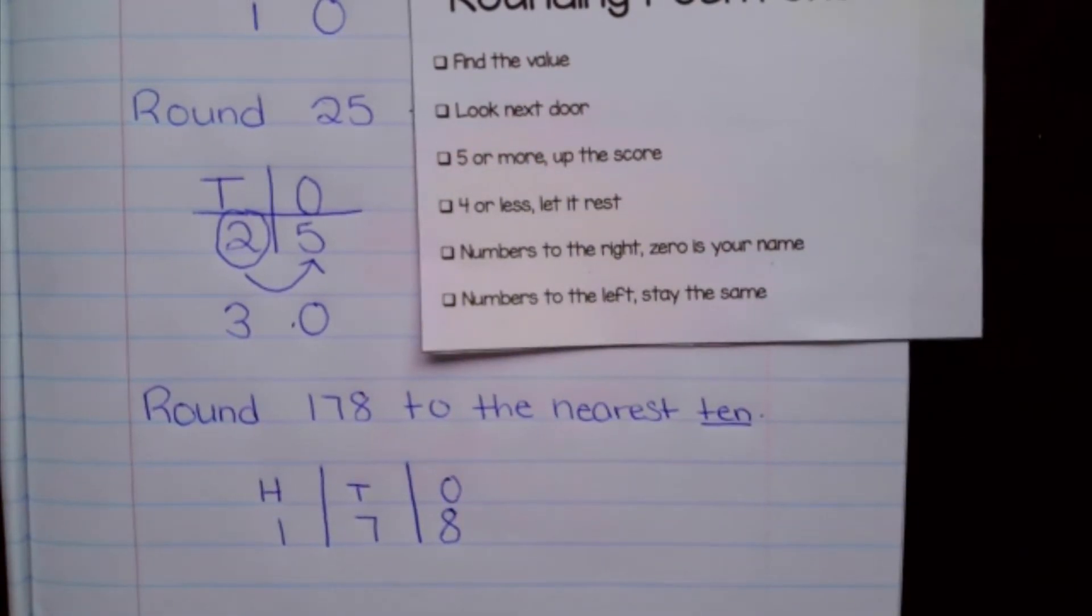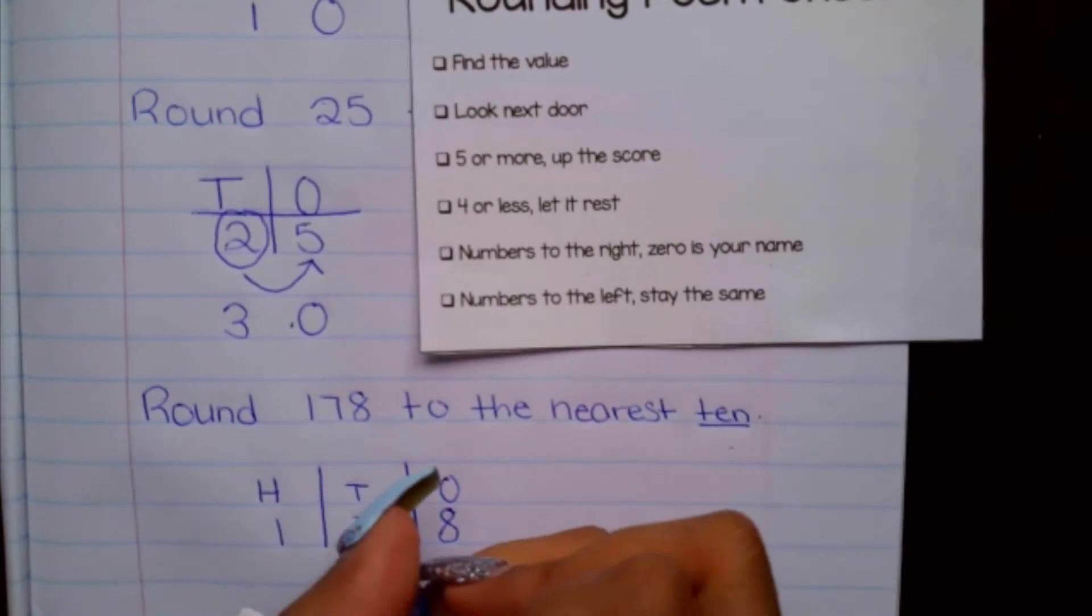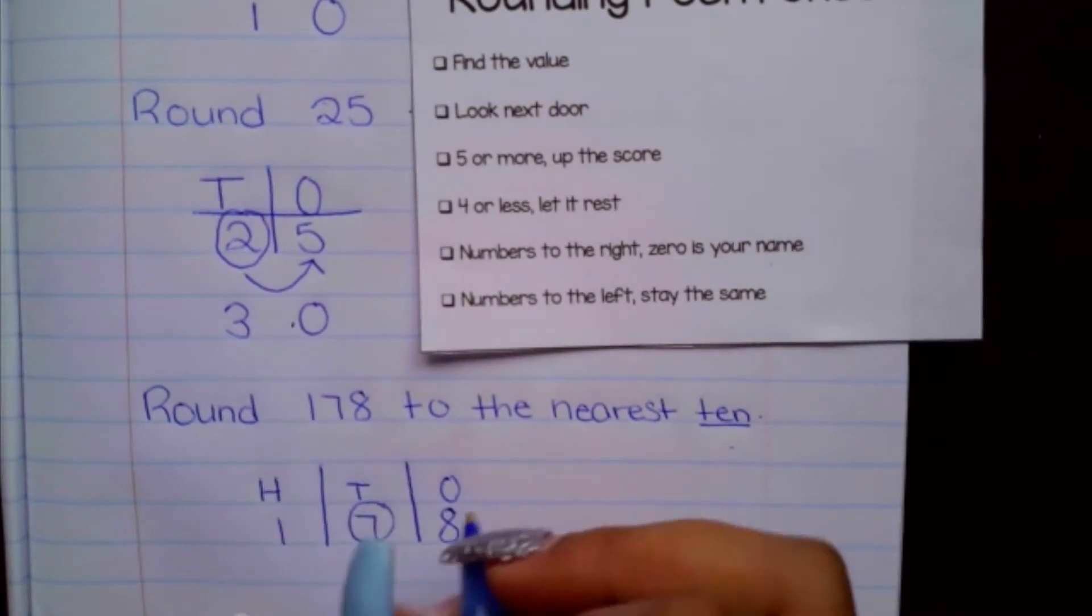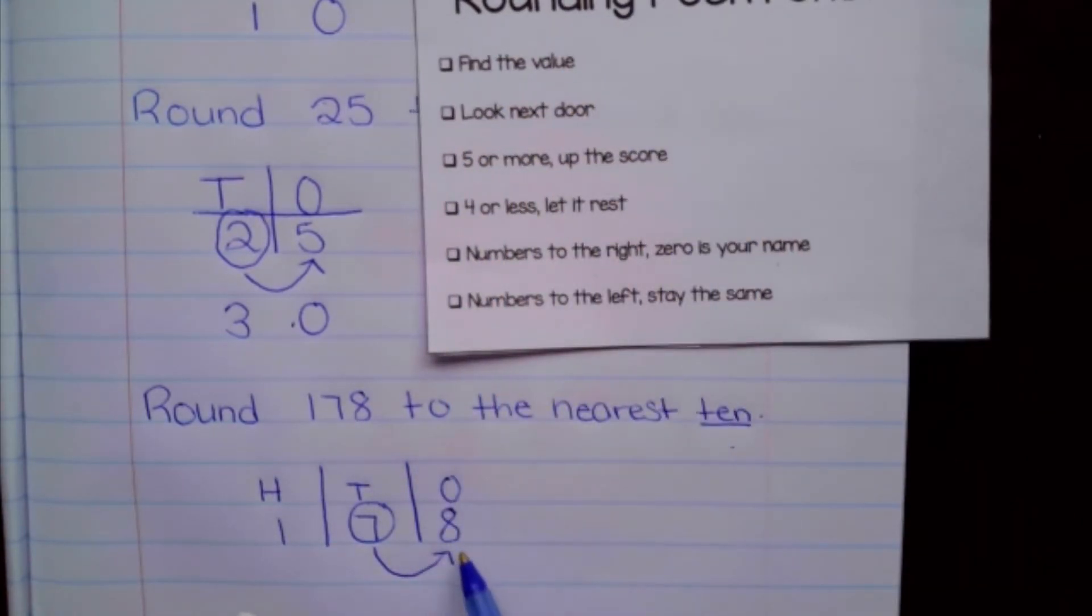Okay, and then now, according to my checklist, it says to find the value. And because I'm rounding to the nearest 10, the digit 7 is going to be my value. I'm going to go ahead and look next door. It says five or more up the score. So this is five or more. So our digit in the tens place gets changed into eight.